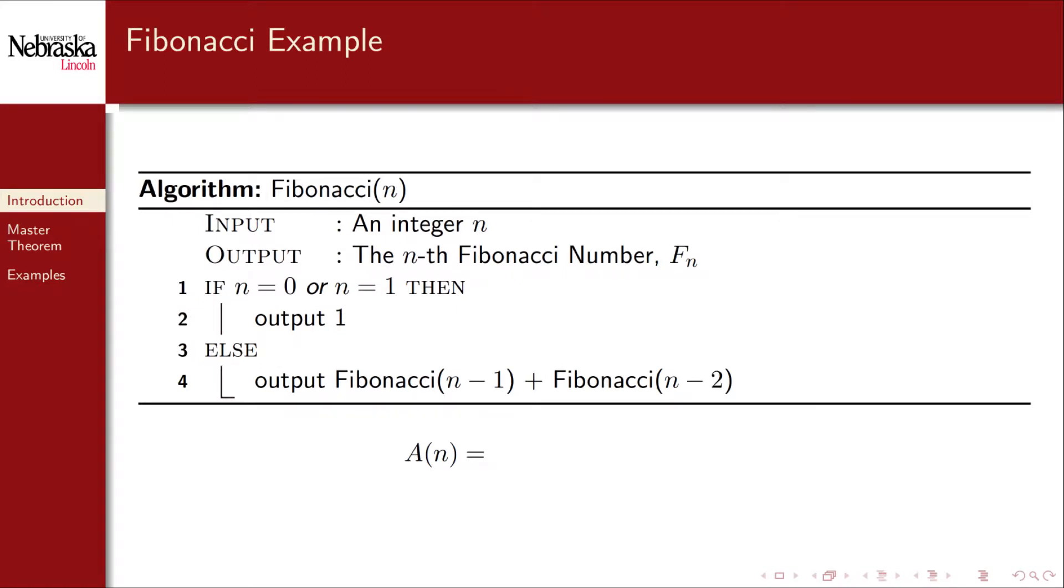Here's the code again. Again, we make one addition on line four. We then make a call to the Fibonacci function on an input of n minus one. So how many additions does this make? We've already defined a sub n to be the number of additions performed by Fibonacci on an input of n. So the number of additions performed by Fibonacci on an input of n minus one is simply a sub n minus one. Likewise, the second call makes a sub n minus two additions.